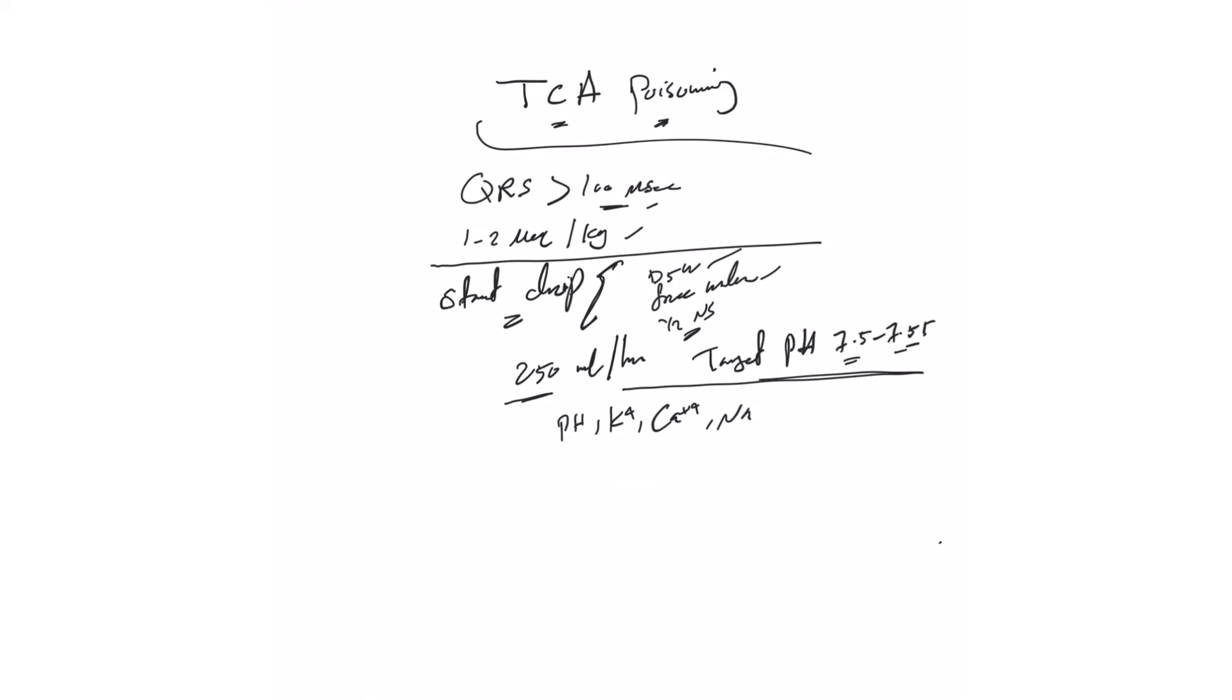Basically, the QRS is now normal, you start weaning drip. There are different ways - some say decrease by 25% every hour until you completely stop the drip.